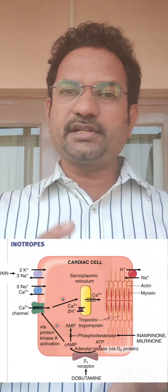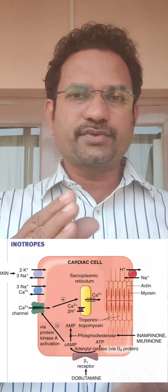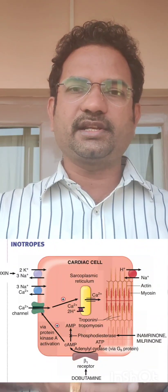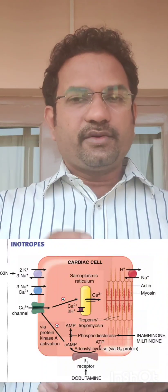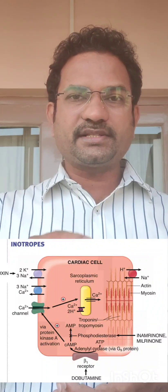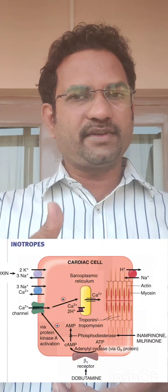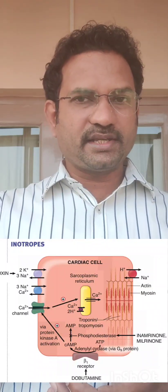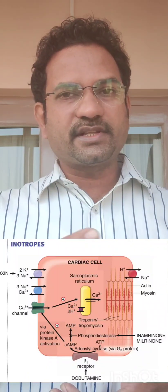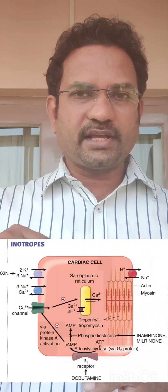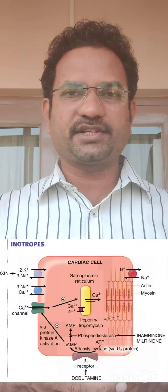The second subclass is digitalis glycosides. Digitalis glycosides also increase the levels of calcium in the heart and cause forceful contractions. The third subclass is phosphodiesterase 3 inhibitors. Phosphodiesterase is an enzyme which metabolizes cyclic AMP to AMP. When this enzyme is inhibited, cyclic AMP levels are increased, which increases protein kinase A activity. Protein kinase A phosphorylates calcium channels and increases calcium levels in the heart. This diagram explains all three classes of inotropes with their mechanism of action.